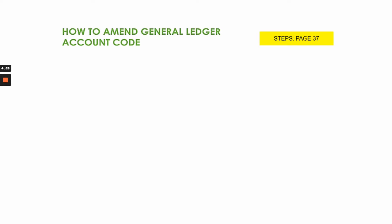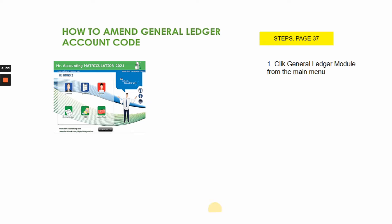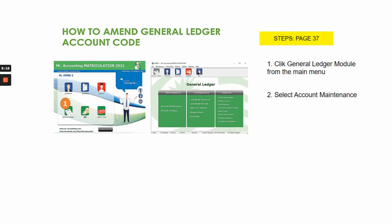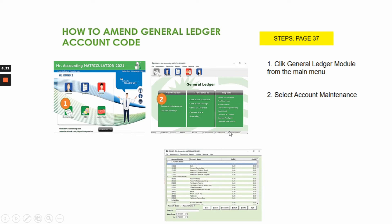So how do you amend a general ledger account code? Step one: click the general ledger module from the main menu — this is the icon for general ledger. Step two: select account maintenance. Step three: look at the list of account maintenance and double click the account in the list to amend the code or name.